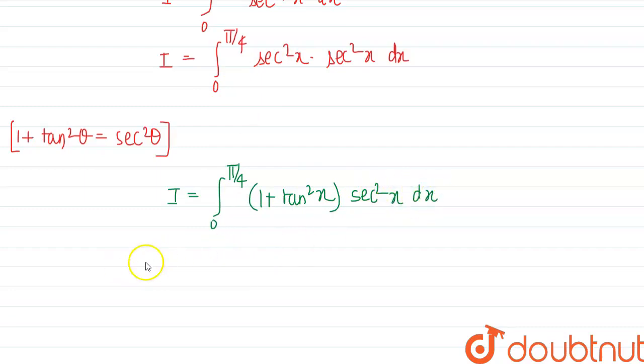And if we let tan x equal to t, then sec square x dx is equal to dt. This term we have over here.